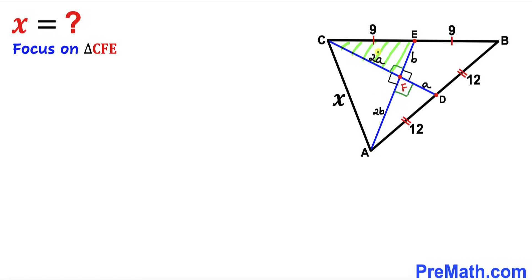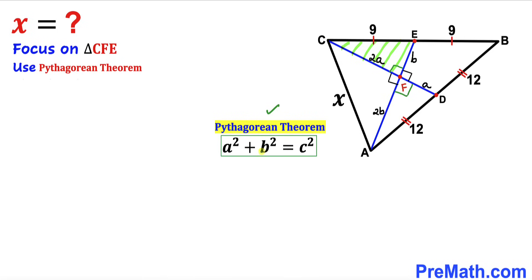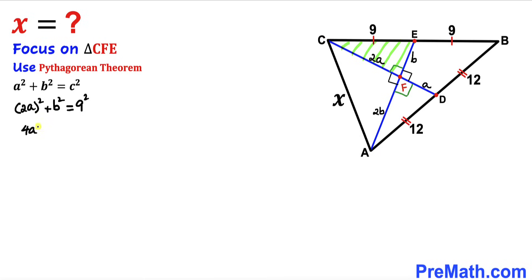Let's focus on right triangle CFE whose side lengths are 9, b, and 2a. We'll use the Pythagorean theorem: a² + b² = c². In our case the longest leg is 9, so filling in: (2a)² + b² = 9², giving us 4a² + b² = 81. Let's call this Equation 1.